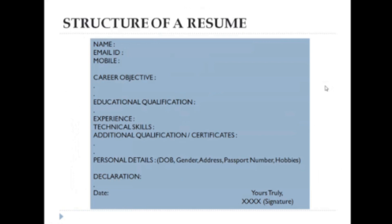After all this, give your personal information like date of birth, gender, and address. You can include both a residential or present address and a permanent address in case you're somewhere else. You can also add your passport number if you have a passport. And finally, add your hobbies under the personal details heading. Make sure your hobbies are not silly.